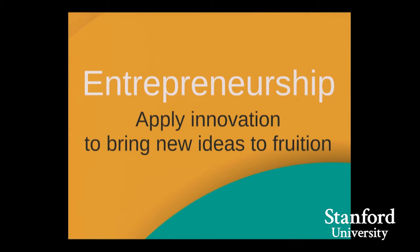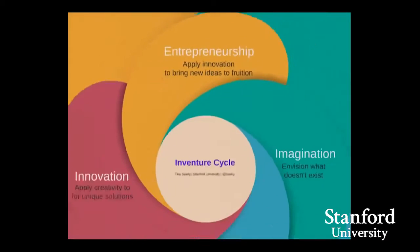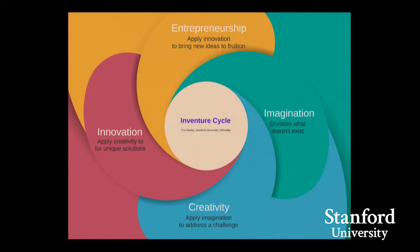Entrepreneurship then is applying our innovation to bring those ideas to life — to bring them to fruition and to the rest of the world. I call this set of definitions the Inventure Cycle. It's a cycle because entrepreneurship, to be successful, requires you to inspire the imagination of other people. You can't do it alone. Think of this framework as very much like learning how to talk: babies naturally babble, they apply those sounds to make words, those words to make sentences, and those sentences to make stories. It's the same sort of hierarchy — you start with basic skills like imagination and layer on other things.